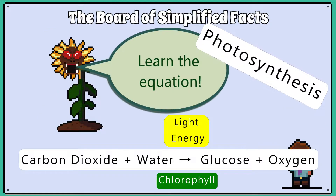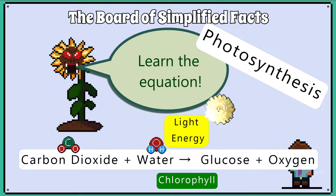You must learn the word equation for photosynthesis, where carbon dioxide reacts with water and with the input of light energy produces glucose and oxygen.